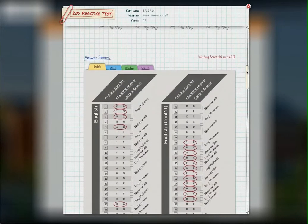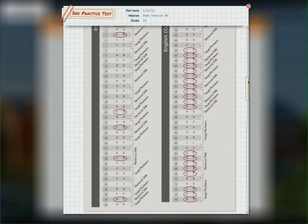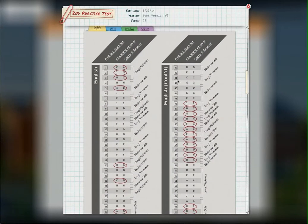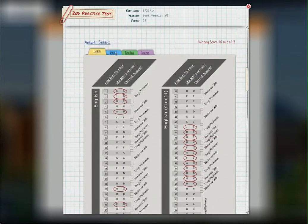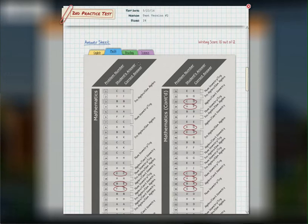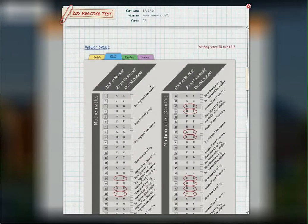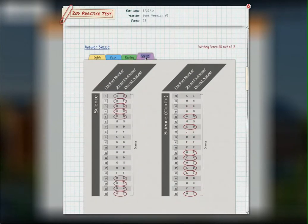For example, you see here in the answer sheet section, the English, the math, the reading and science. You can see exactly how the student did, which questions they missed and what subject and what topics those questions come under. That's going to be very useful when I show you the quizzes. If you click in there on the math, you can see how the student did on math, reading and on science.